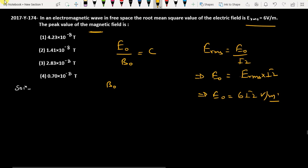The peak value of the magnetic field, B_0, will be E_0 by c, the speed of light. So B_0 will be 6 root 2 divided by c. C is 3 × 10^8, which simplifies to 2...